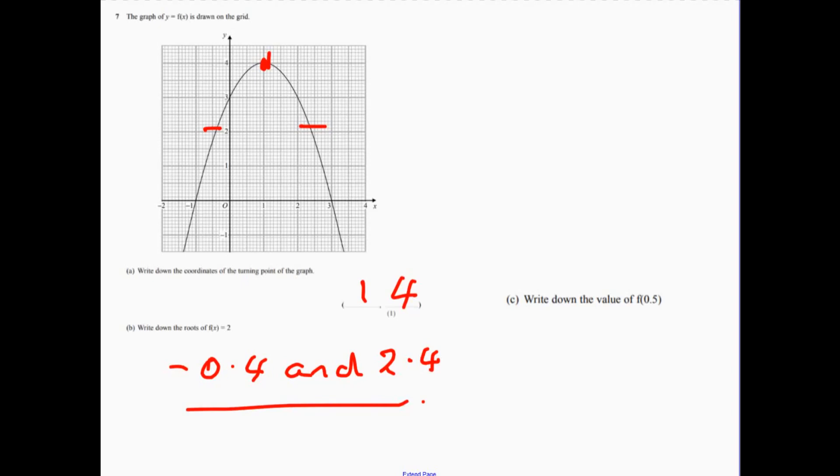And then part c says, write down the value of what is our function when we input 0.5 into it. In other words, there's 0.5 going into our function. So what's this number just up here?